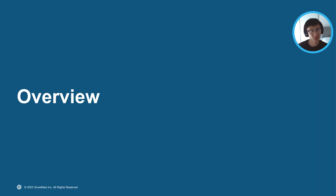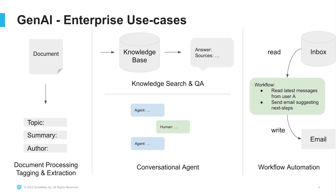Let's start with an overview of retrieval augmented generation. There are a lot of generative AI use cases these days, ranging from document processing, tagging and extraction, knowledge search and QA, conversational agents, and workflow automation. The bulk of enterprise use cases we've seen today typically center around search and retrieval, and this relates a lot to the concept of retrieval augmented generation, where you can ask a question to the language model and its knowledge is augmented with information from a knowledge base.